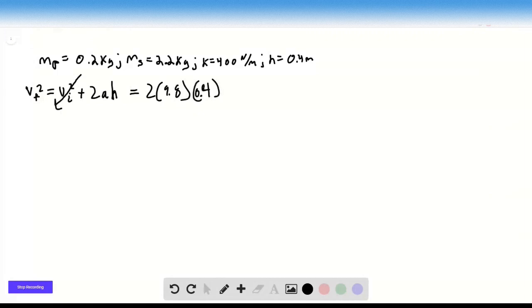And we can take the square root of both sides, and we get that the velocity of the steak, so it's the final velocity in this kinematic equation, the velocity of the steak is 2.8 meters per second.